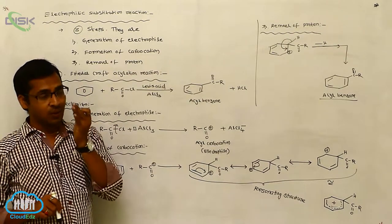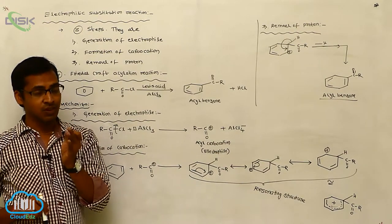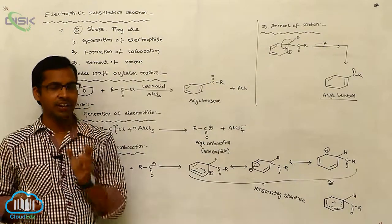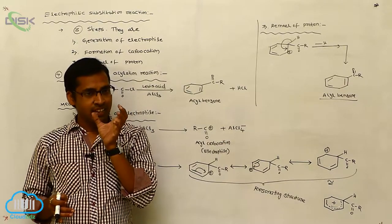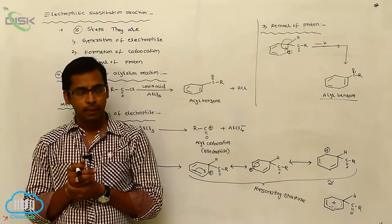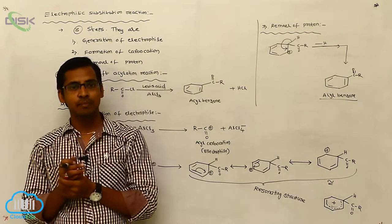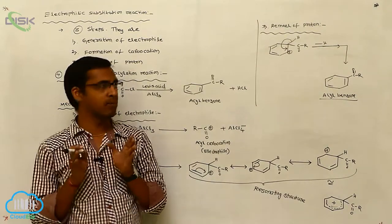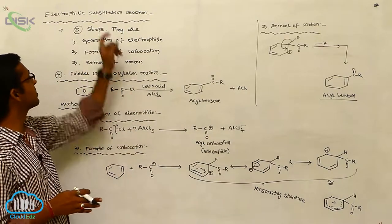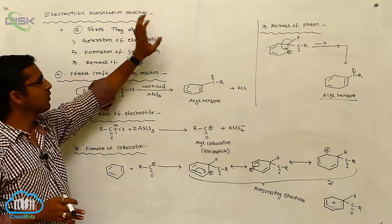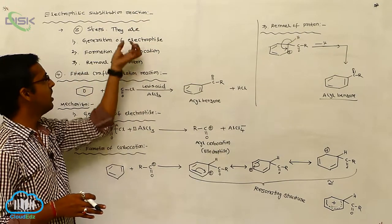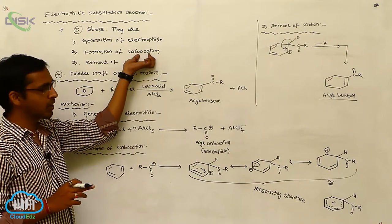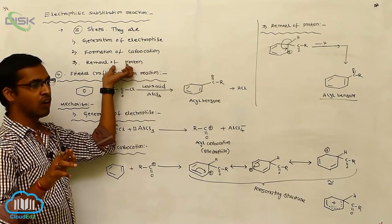But in nitration reaction, the electrophile is generated from concentrated sulphuric acid, which donates a proton to nitric acid. Here, concentrated sulphuric acid acts as an acid and HNO3 acts as a base — this is a simple example of acid-base equilibrium. Nitration is also an example of electrophilic substitution reaction, involving three steps: formation of electrophile, attack of electrophile on benzene forming a carbocation, and removal of proton.